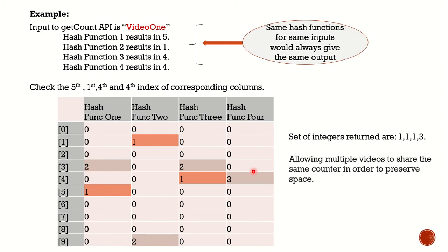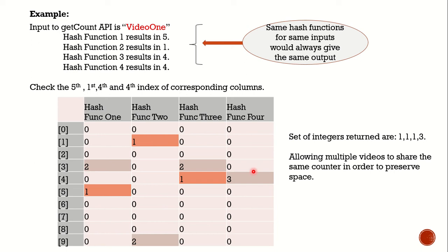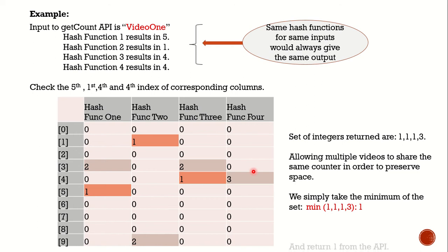The value at the fourth index is 3 because we allow multiple videos to share the same counter in order to preserve space. But the count of video 1 is simply the minimum of 1, 1, 1, and 3 — and this is where we get the name Count Min Sketch: to get the count, we take the minimum from the sketch. So the answer for video 1 is 1.